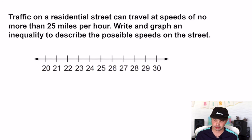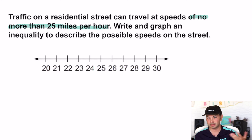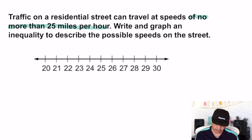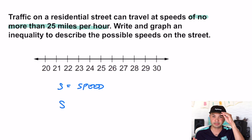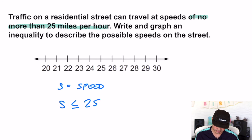It says traffic on a residential street can travel at speeds of no more than 25 miles per hour. Write and graph an inequality to describe the possible speeds. You need a variable — let's call S for speed. Your speed is no more than 25 miles per hour, meaning it can be 25 miles per hour or less. So the inequality is S ≤ 25. To graph this, it's a closed circle — less than or equal to — going to the left because it has to be 25 miles per hour or slower.